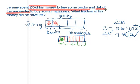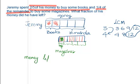Now 1/4 of the remainder — meaning this first portion — is used for buying magazines. So the remainder after magazines: how many sub-units are left? Counting the remaining sub-units, the money left equals 9 units.